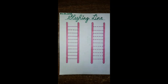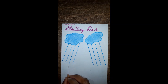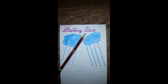Hello children, today we will learn how to make a slanting line. Before we start with slanting line, let's quickly revise what standing line and sleeping line means. Which line is this? This is a standing line. Which line is this? This is a sleeping line.